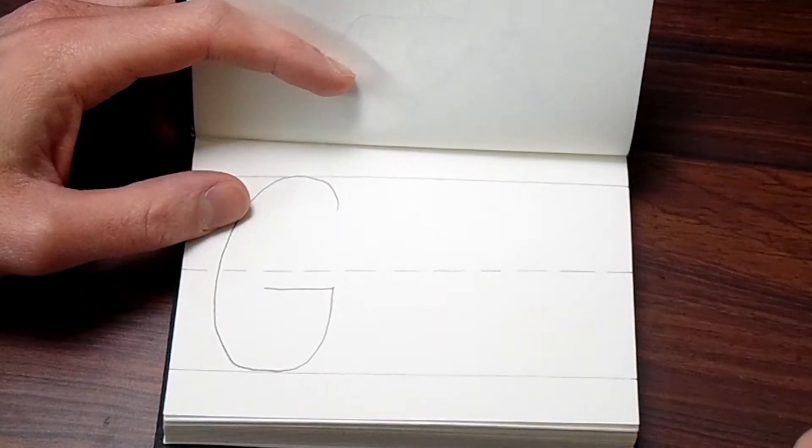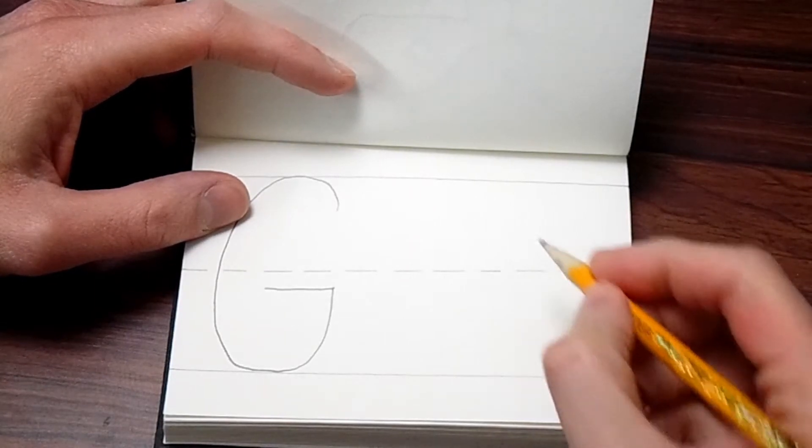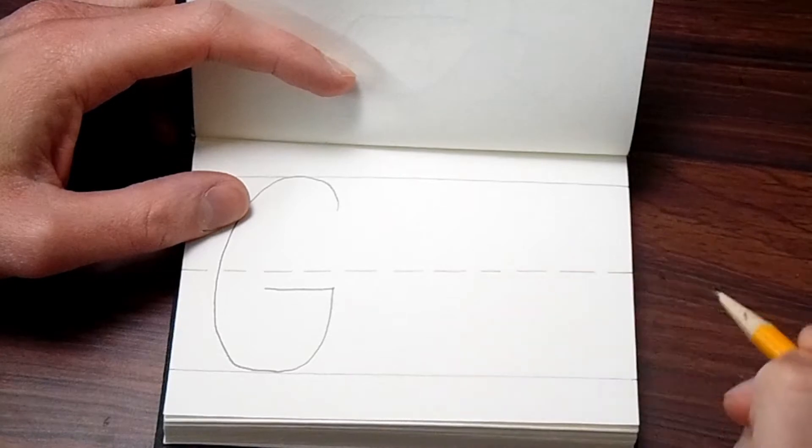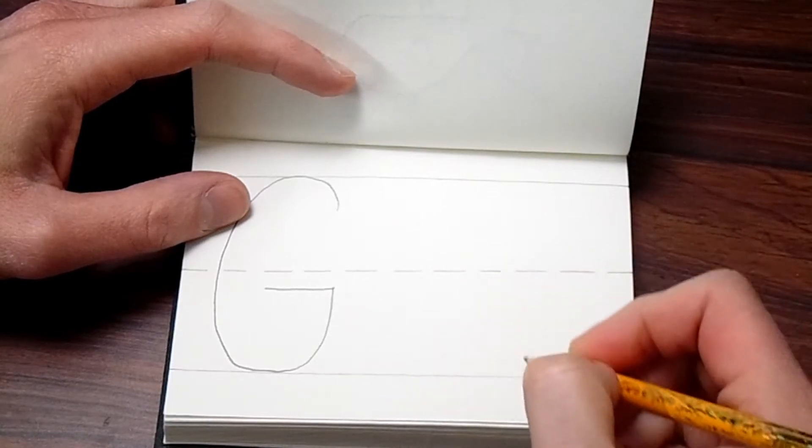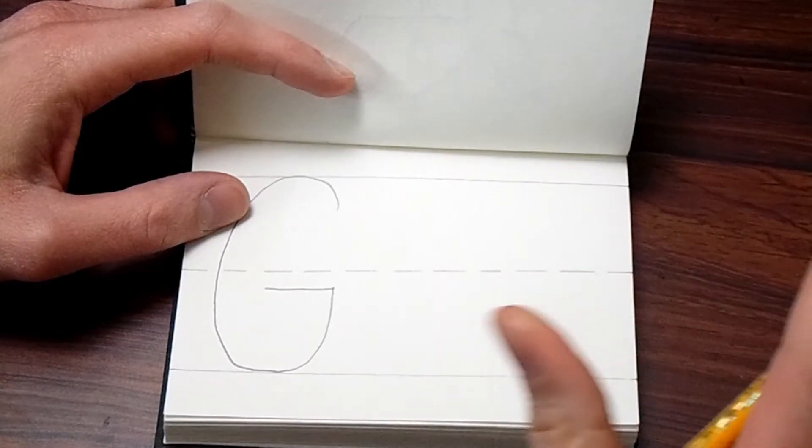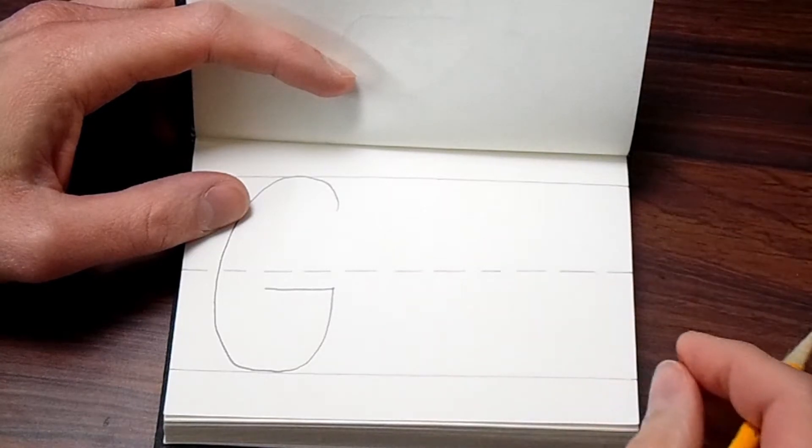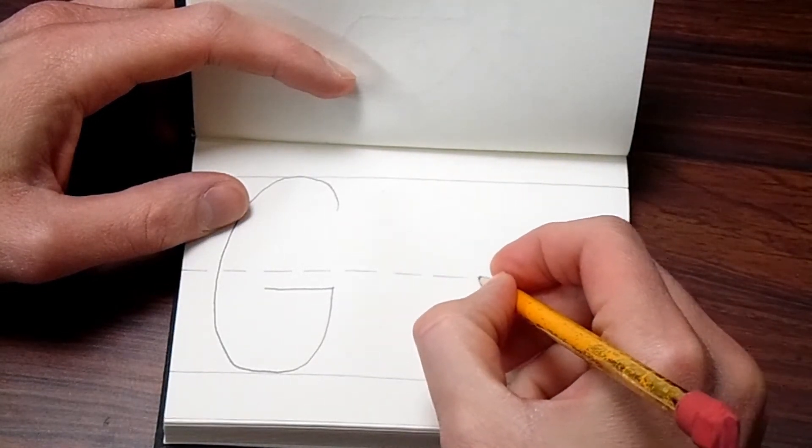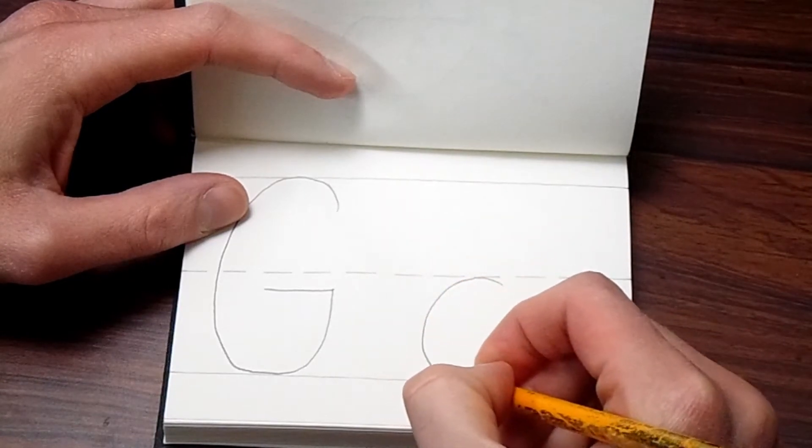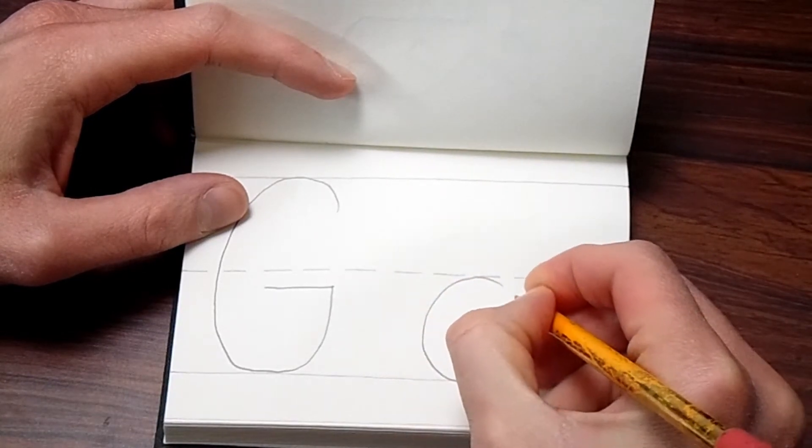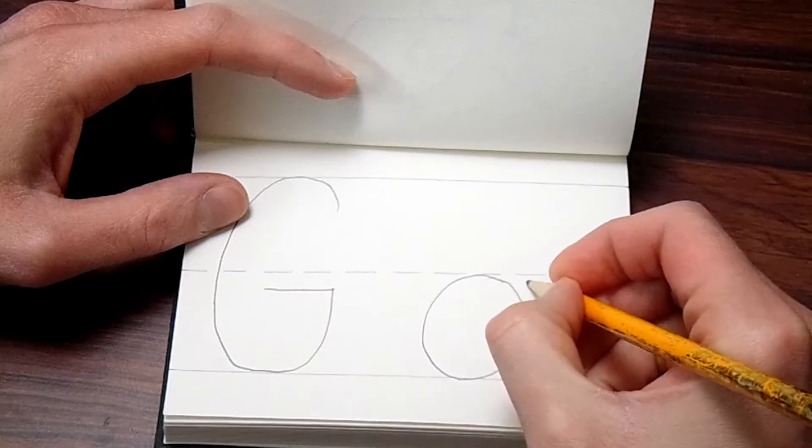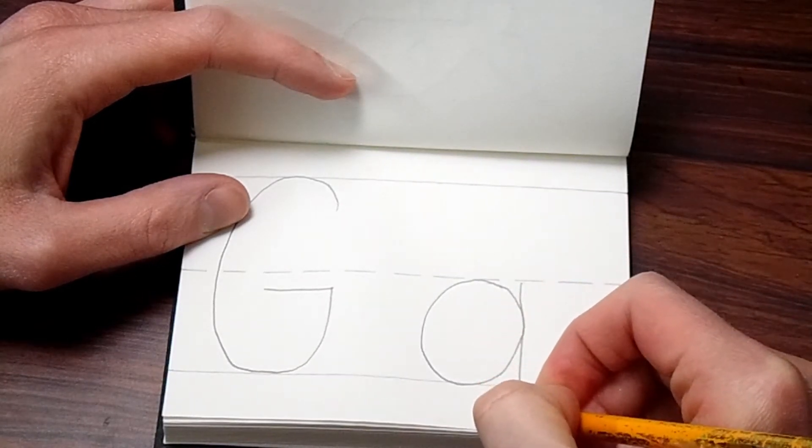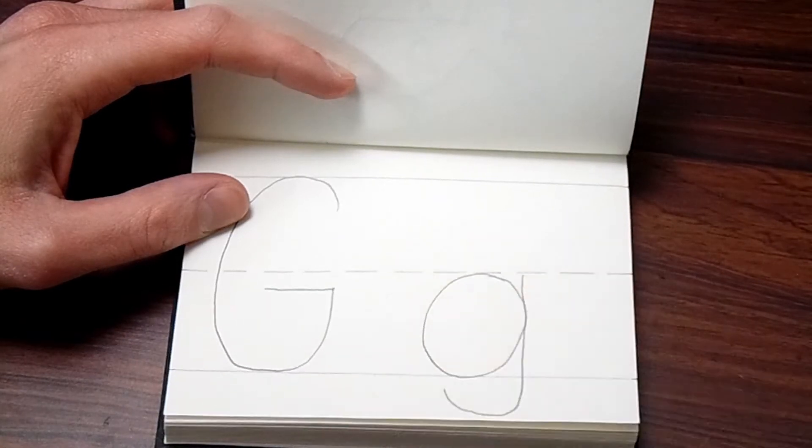To do the lowercase g, it's just a circle with a hook. So the circle is going to go between the halfway and the bottom line, and then the hook is going to go below that bottom line. I didn't leave myself enough room, but I should make it work. So it's going to be a circle between the middle and the bottom line, and then the hook is going to come down the right-hand side and curve back up underneath.